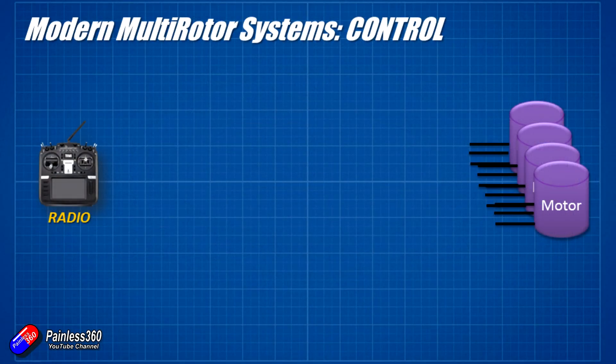Here on the first slide, let's define the edges of the system we're about to explore. On the very left-hand side we have the radio — that's the radio that's going to be in our hands — and those come in lots of shapes, sizes, prices and manufacturers, but they all fundamentally do the same thing: they send the control positions via radio waves to your model and then your model does something with it. On the right-hand side, on the quadcopter, that's going to be the four motors, one on each of the four arms. The first step is going to be connecting up to the receiver.